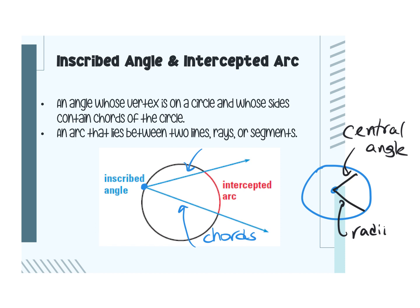The inscribed angle has its vertex on the side, and the intercepted arc is defined as an arc that lies between two lines, rays, or segments. In this picture, the intercepted arc formed by that inscribed angle is right here. Same thing on the central angle — this would be the intercepted arc for that central angle.